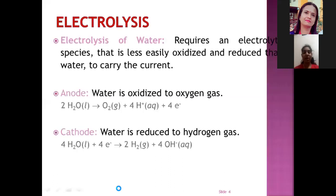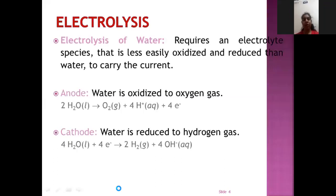Now, electrolysis of water. Electrolysis of water requires an electrolyte species that is less easily oxidized and reduced than water to carry the current. Anode: water is oxidized to oxygen gas and the reaction is 2H2O gives O2 plus 4H plus plus 4 electron. Cathode: water is reduced to hydrogen gas and the reaction is 4H2O plus 4 electron gives 2H2 plus 4OH minus.